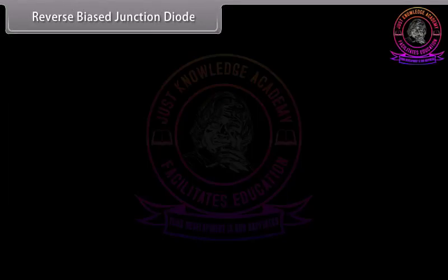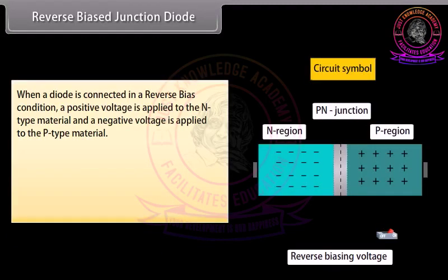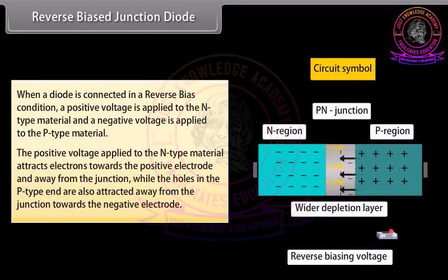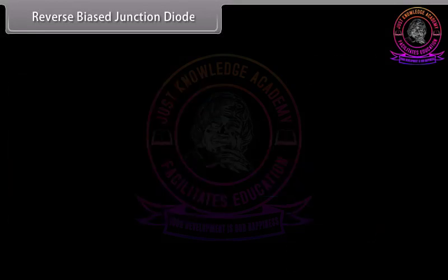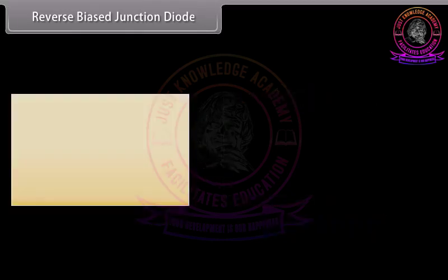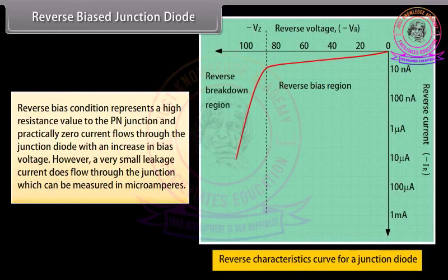Reverse-biased junction diode: when a diode is connected in reverse-bias, a positive voltage is applied to the N-type material and a negative voltage to the P-type material. The positive voltage attracts electrons away from the junction while holes in the P-type end are also attracted away from the junction. The depletion layer grows wider, presenting a high-impedance path — almost an insulator. Reverse-biased condition represents a high-resistance value and practically zero current flows, though a very small leakage current measured in microamperes does flow through the junction.